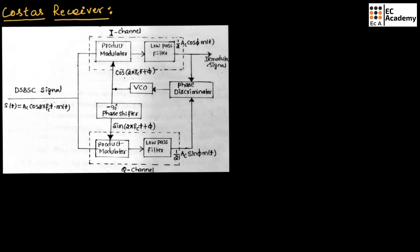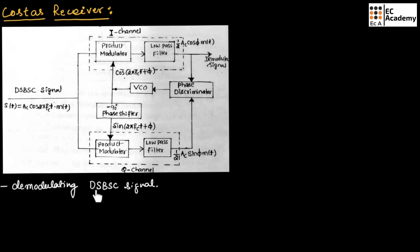The Costas receiver is a practical synchronous receiver system that is suitable for demodulating DSBSC signals. It is also known as the Costas loop or practical synchronous receiver.